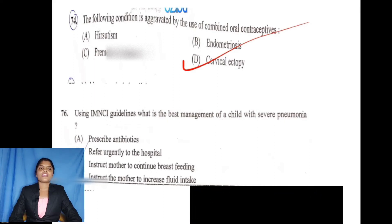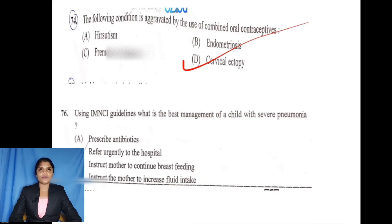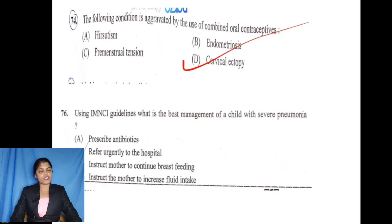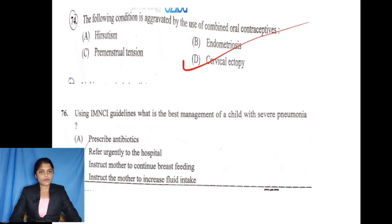Using IMNCI guidelines, what is the best management of a child with severe pneumonia? Option A is prescribed antibiotic. Option B is refer urgently to the hospital. Option C is instruct mother to continue breastfeeding. Option D is instruct mother to increase fluid intake. The answer is refer urgently to the hospital. This is correct.